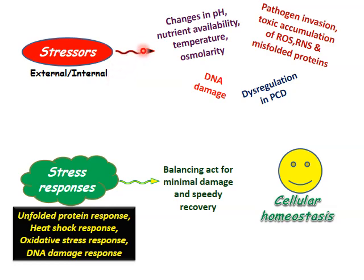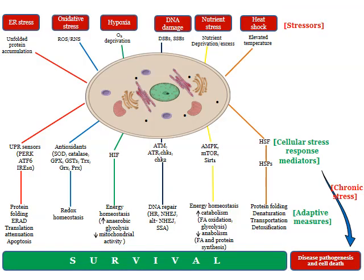These stressors will trigger specific pro-survival strategies in the form of stress responses, aimed for minimal damage to the cells or speedy recovery. There may be multiple stressors which can be mainly listed as ER stress, endoplasmic reticulum stress, oxidative stress, hypoxia, DNA damage, nutrient stress, and heat shock. In response to these stressors, the cellular stress response mediators will be triggered, which will execute adaptive measures to bring back cellular homeostasis and ensure cell survival.